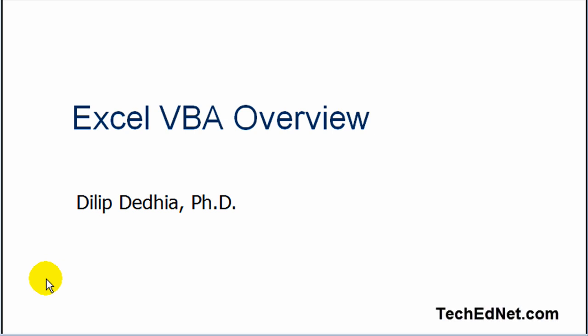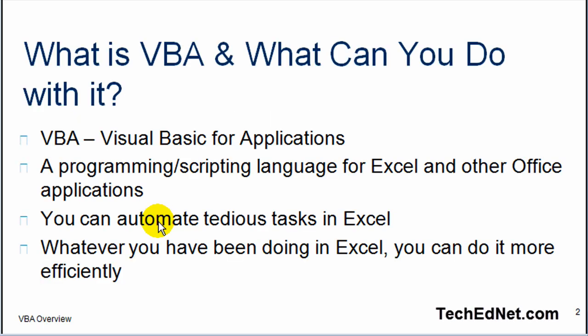In this short video, I would like to give you a quick introduction to VBA and hopefully convince you to learn more about it. So, what is VBA and what can you do with it? VBA stands for Visual Basic for Applications. It is a programming or scripting language for Excel and other Office applications. You can automate tedious tasks in Excel — whatever you have been doing in Excel, you can do it more efficiently using VBA.